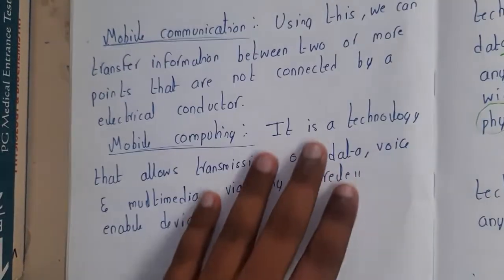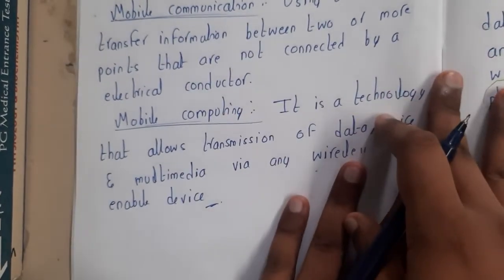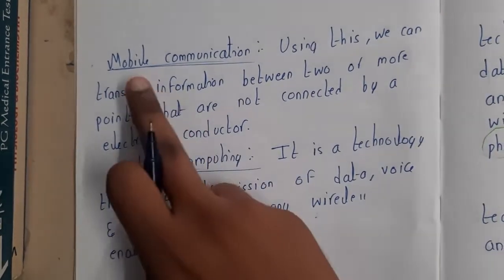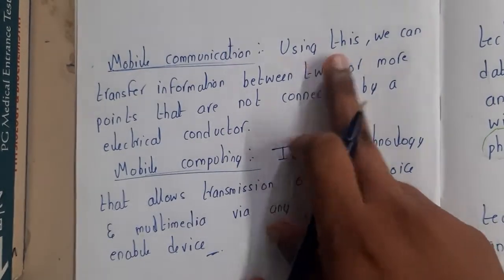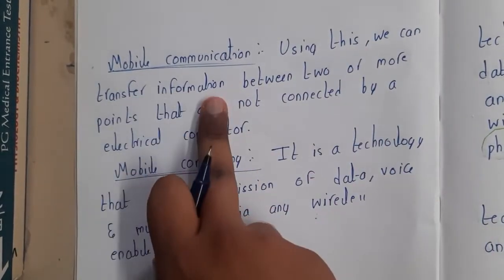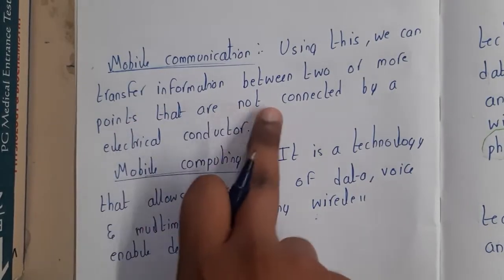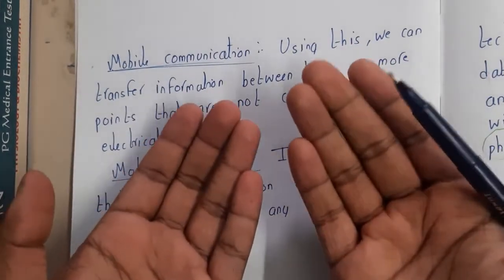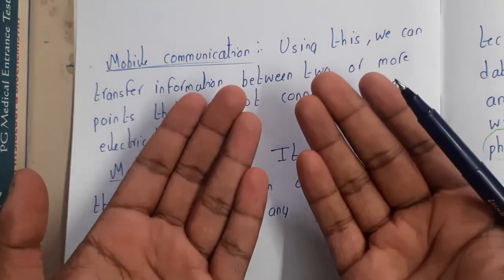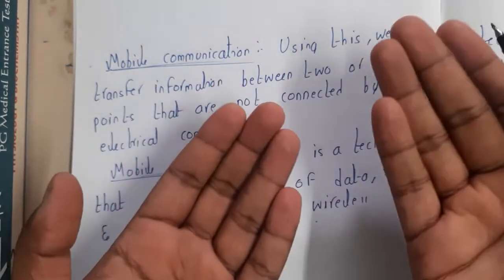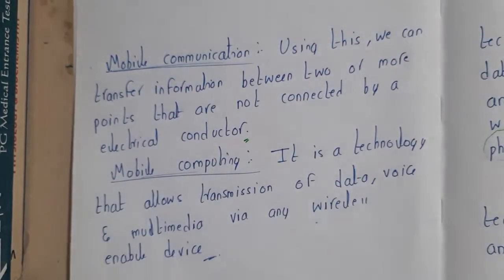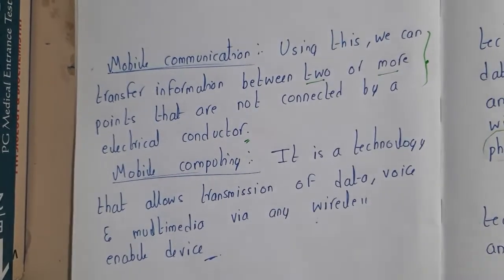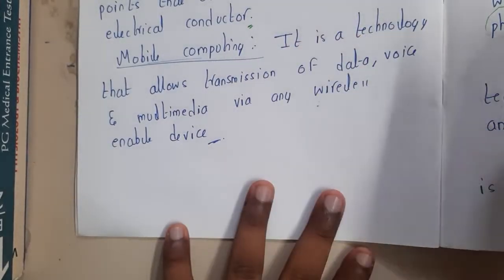In simple words, a movable computer is nothing but mobile computing — though that's just for your understanding, not a formal definition. Now let's go through a few more terminologies. Mobile communication: using this we can transfer information between two or more points that are not connected by an electric conductor. So mobile communication involves movable devices or things that can communicate among themselves, and there may be two or more such devices.